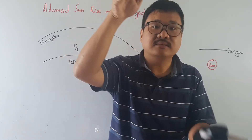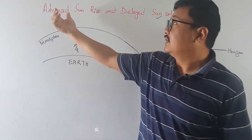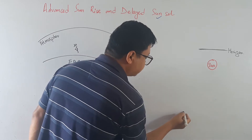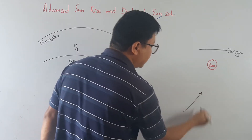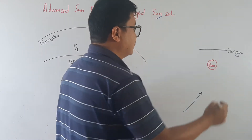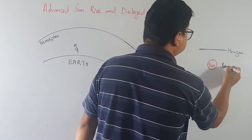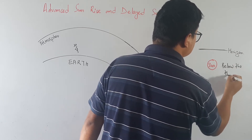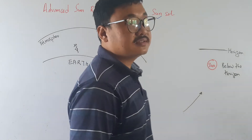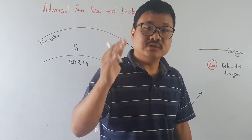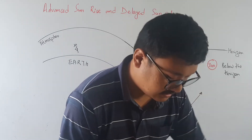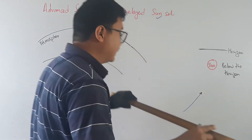Now let us look at the advanced sunrise, also called early sunrise. The sun is coming from downward and it is reaching a point that is below the horizon. Sun is below the horizon, which means the sun has not risen up and we should not be able to see it. But what happens is that there is a ray of light coming from the sun.